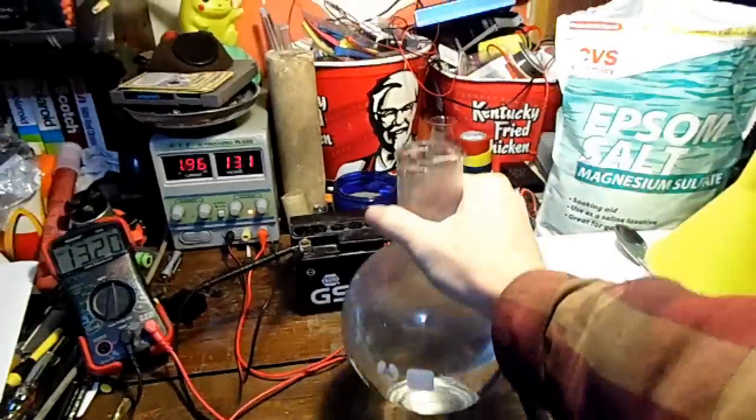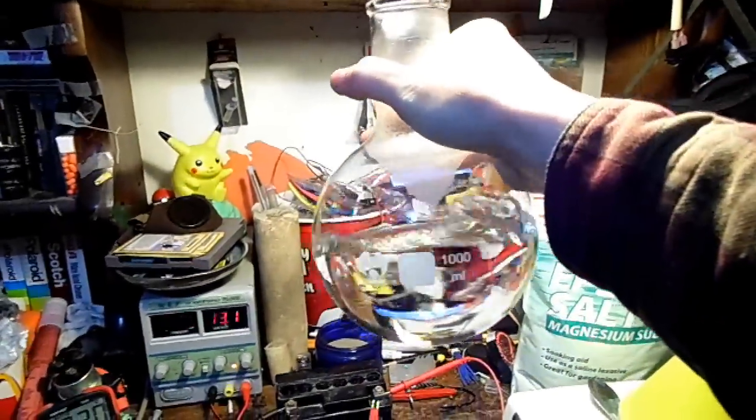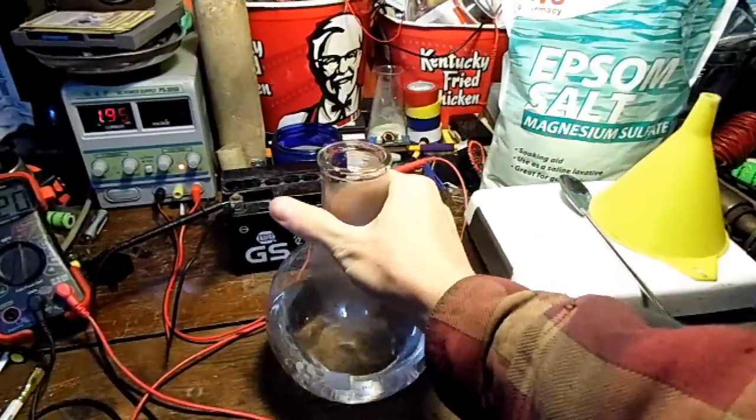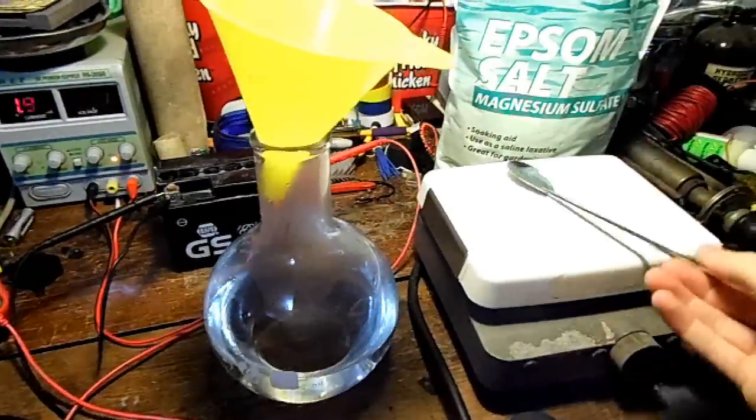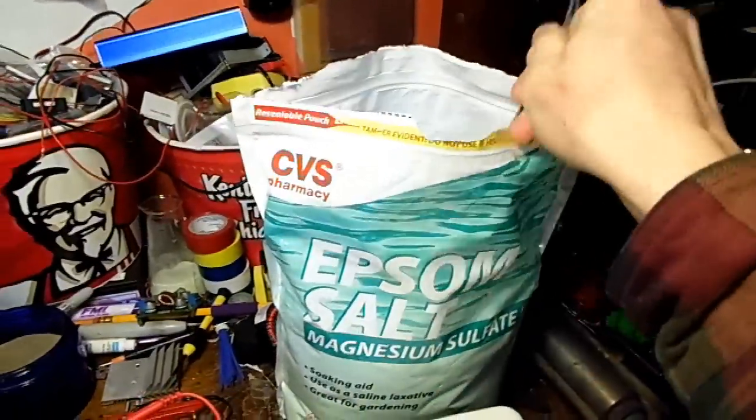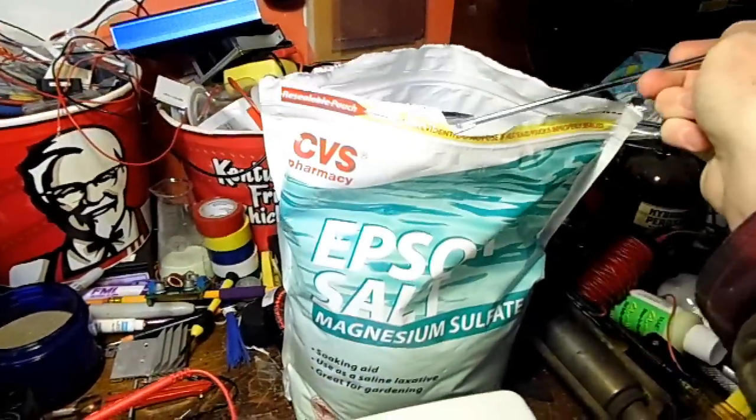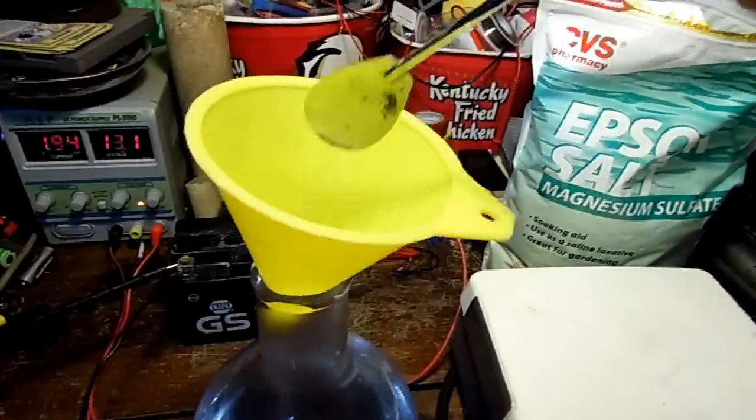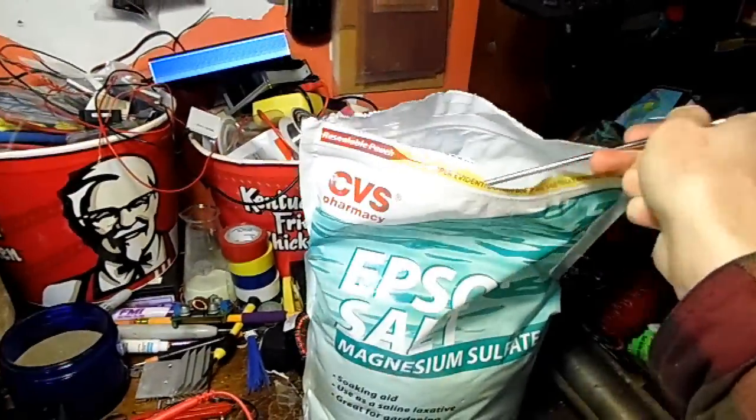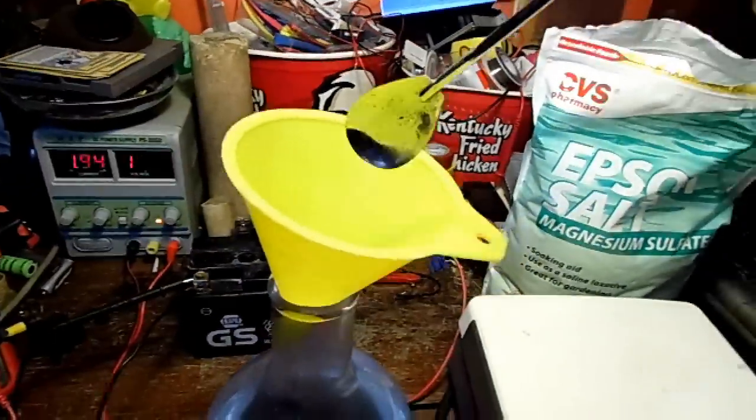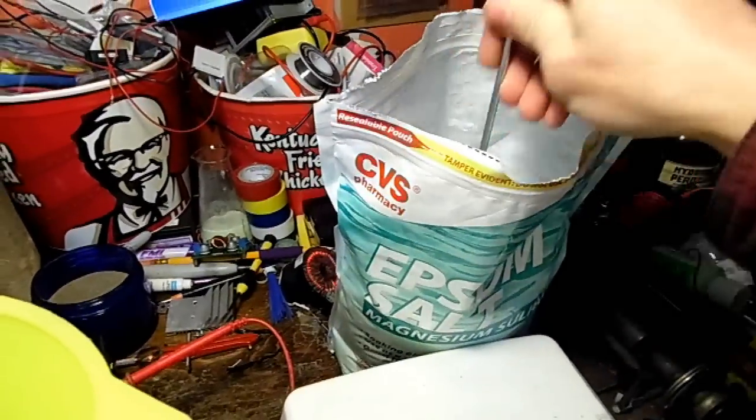For the electrolyte we'll start with some hot water. I'm putting it in a 1,000 milliliter boiling flask, get a funnel, add some Epsom salt to it. The main problem with Epsom salt is it chunks up pretty bad.